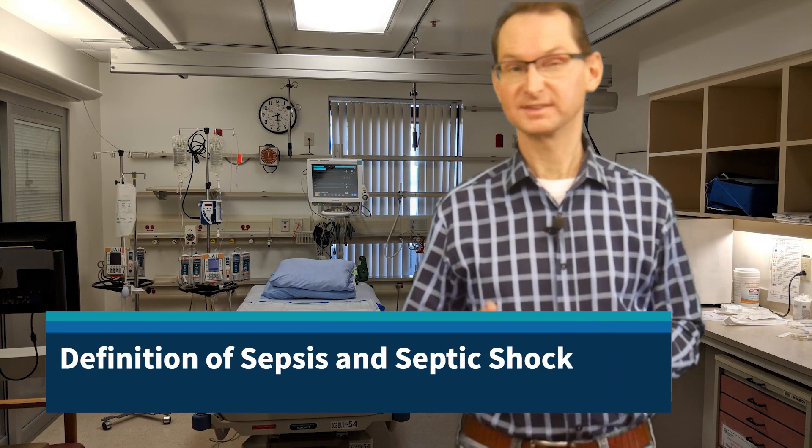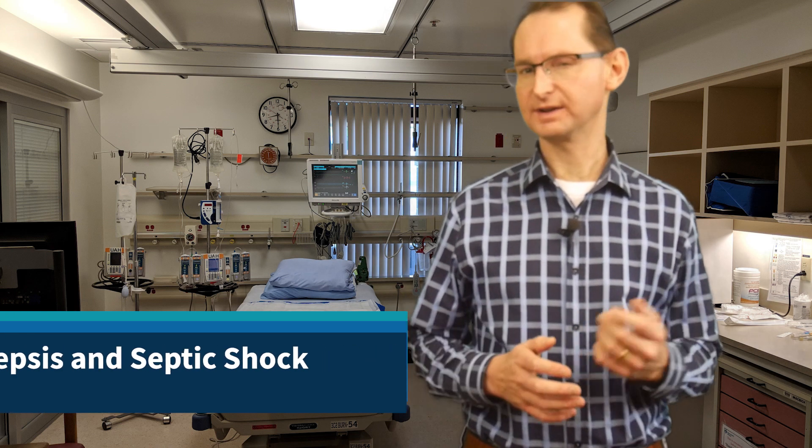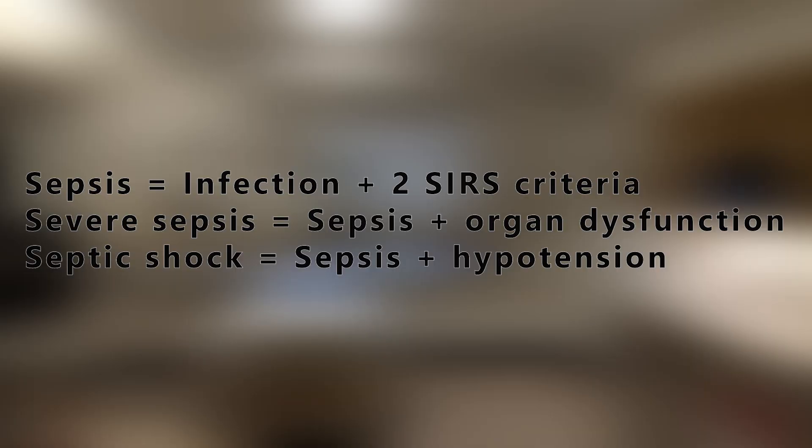One of the first problems with sepsis is a clear definition. This lack of clarity created confusion with research. So in the early 1990s, the American College of Chest Physicians and Society of Critical Care Medicine agreed on a consensus statement defining sepsis and septic shock. Sepsis is defined as an infection with at least two SIRS criteria. Severe sepsis occurs when a patient has sepsis and evidence of acute organ dysfunction. Septic shock is sepsis with refractory hypotension despite adequate fluid resuscitation. Understanding these definitions is a core concept in critical care, even if the sensitivity and specificity of this criteria is still being debated.